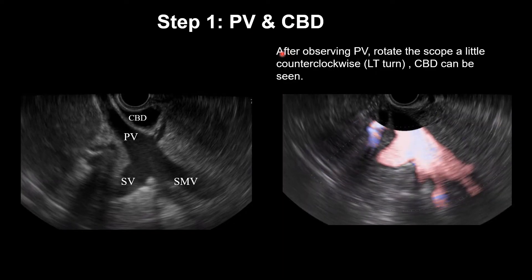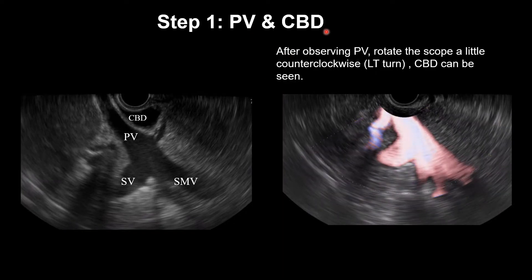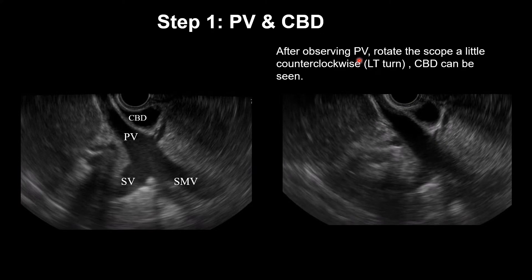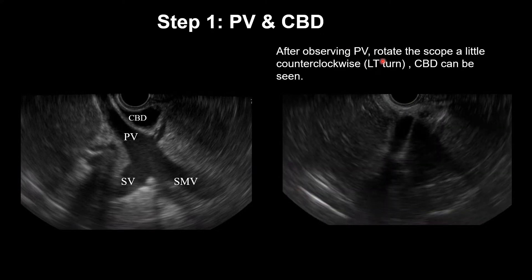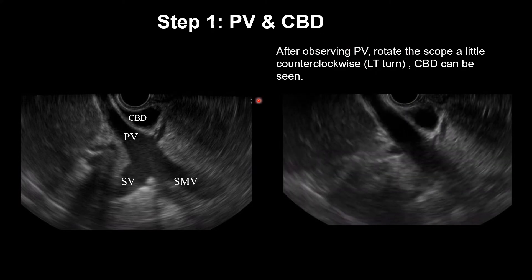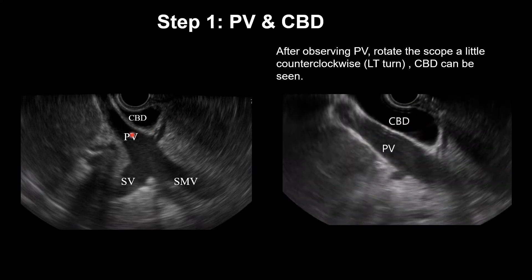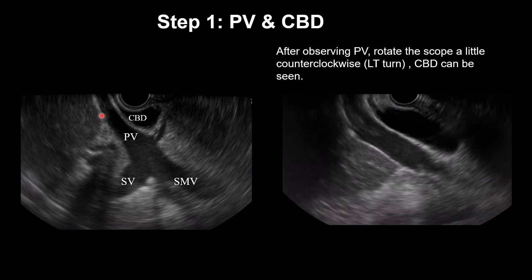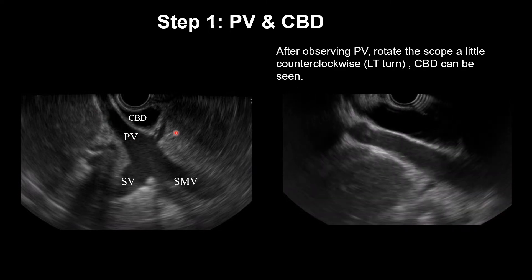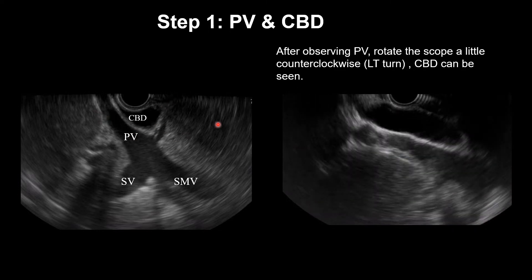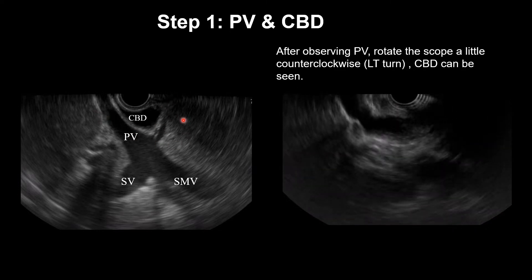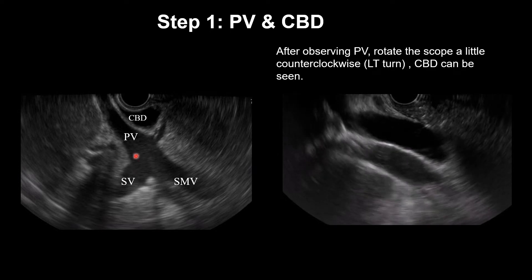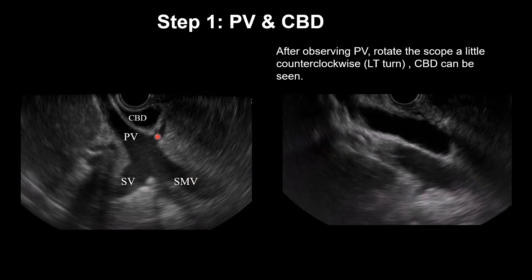Step 1: portal vein and CBD. After observing the portal vein, rotate the scope a little counterclockwise. The CBD can be seen. This area is the pancreatic head area. This area shows the splenic vein and SMV.